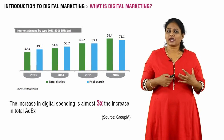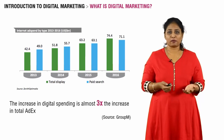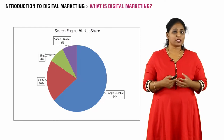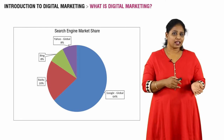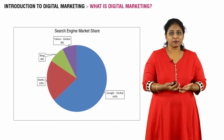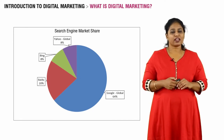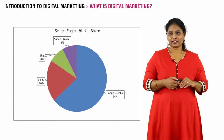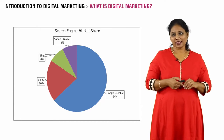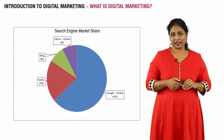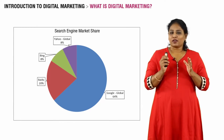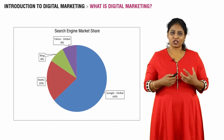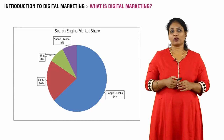When we talk about search advertising, where is this money being spent? This is related to where people spend their time. This graph shows that the Google search engine has the largest chunk, followed by Baidu, Yahoo, and Bing.